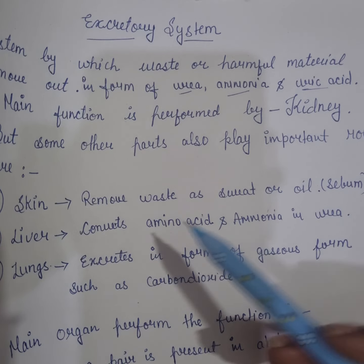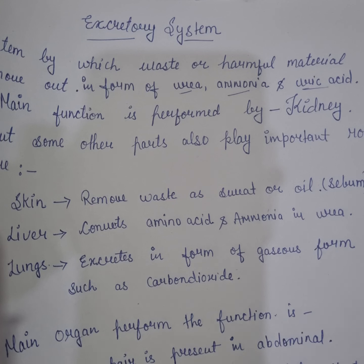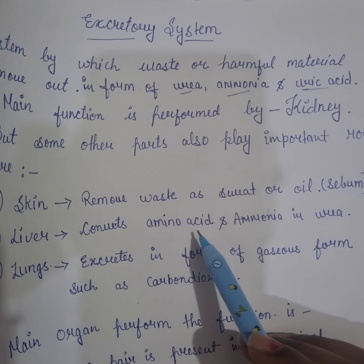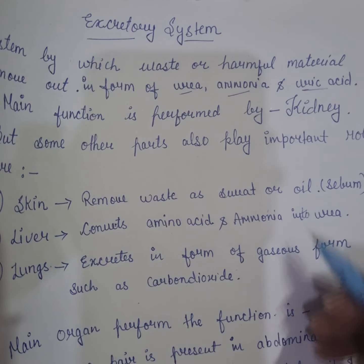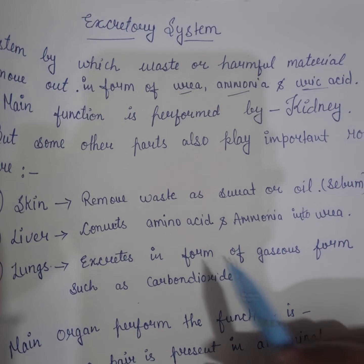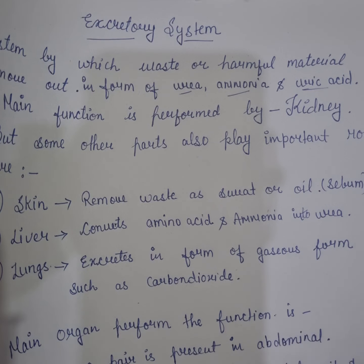The liver performs detoxification. In our body, there are some elements that can be toxic. The liver converts amino acids into urea. Urea is a form that can be stored in our body and will not harm us, but amino acids and ammonia can be harmful. Excess ammonia can also be harmful to the brain.